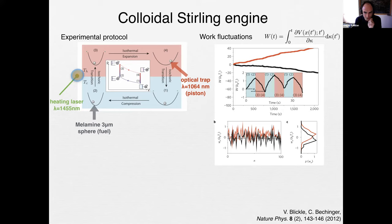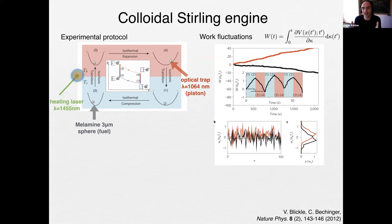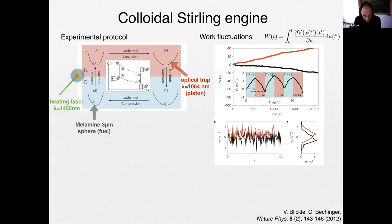There is only conservative work here — a potential that changes in time. You just need ∂V/∂κ · dκ, since we are only changing the stiffness of the trap, which is the strength of the harmonic well. The black line on the top right is the work accumulated over many cycles — you see work extraction during this cycle many times, and if you reverse you do work on the system. Inside you see two sub-cycles.